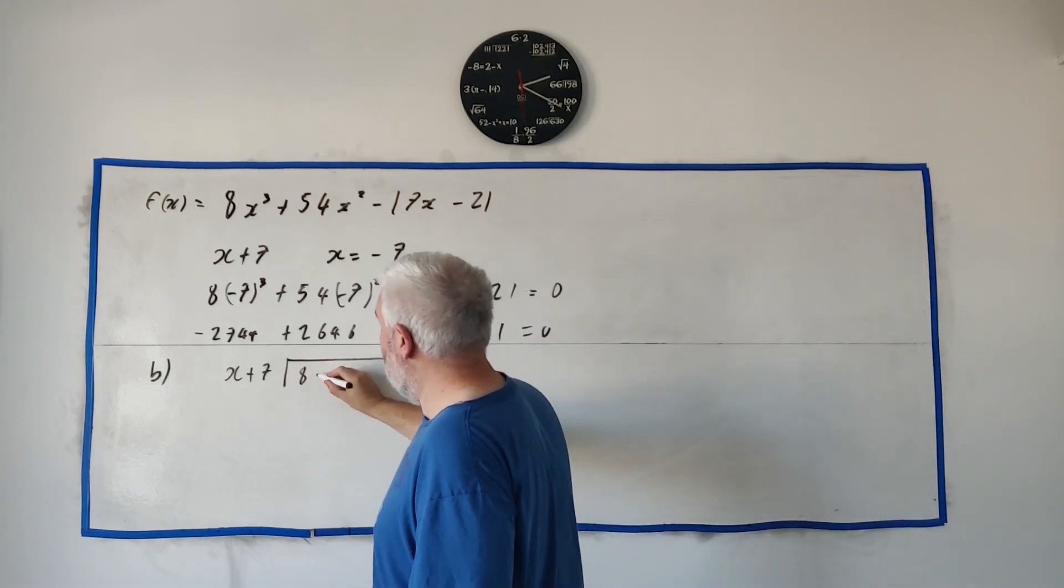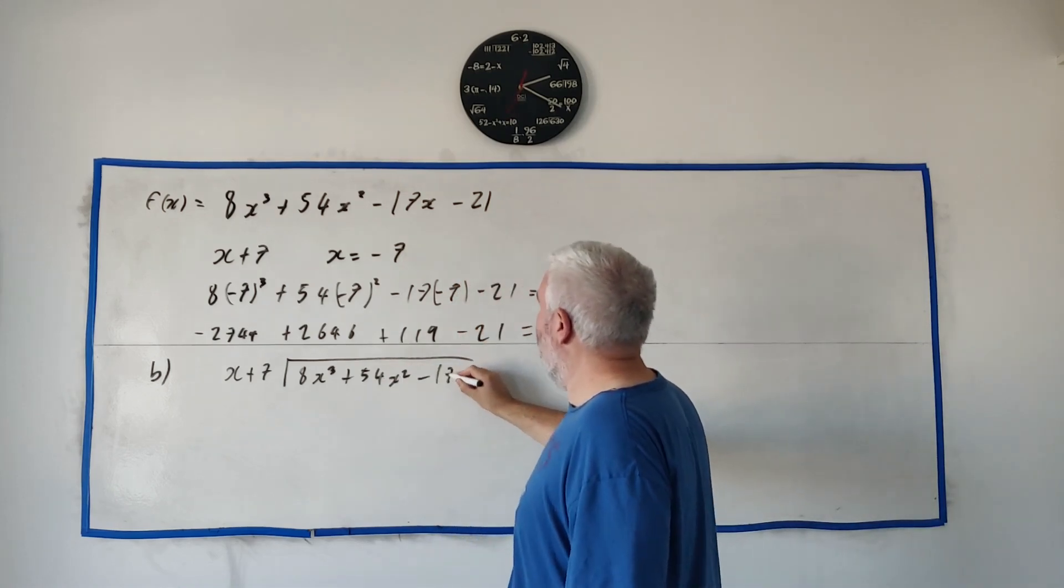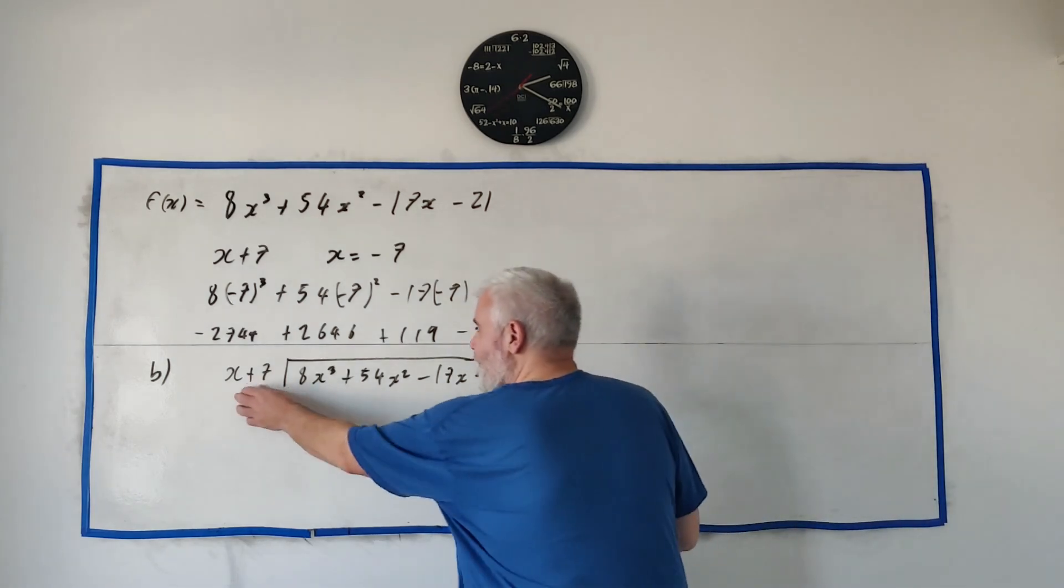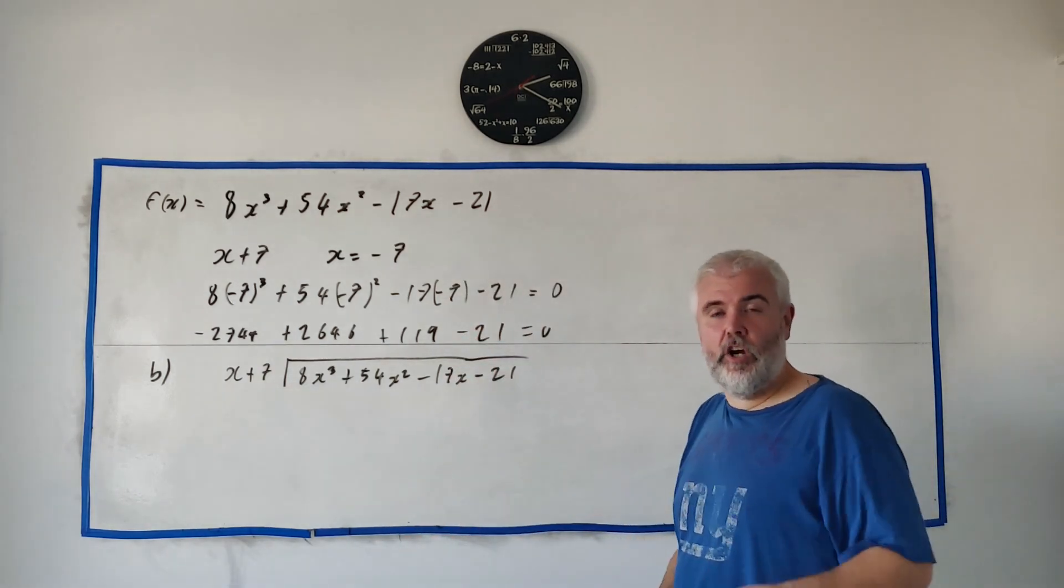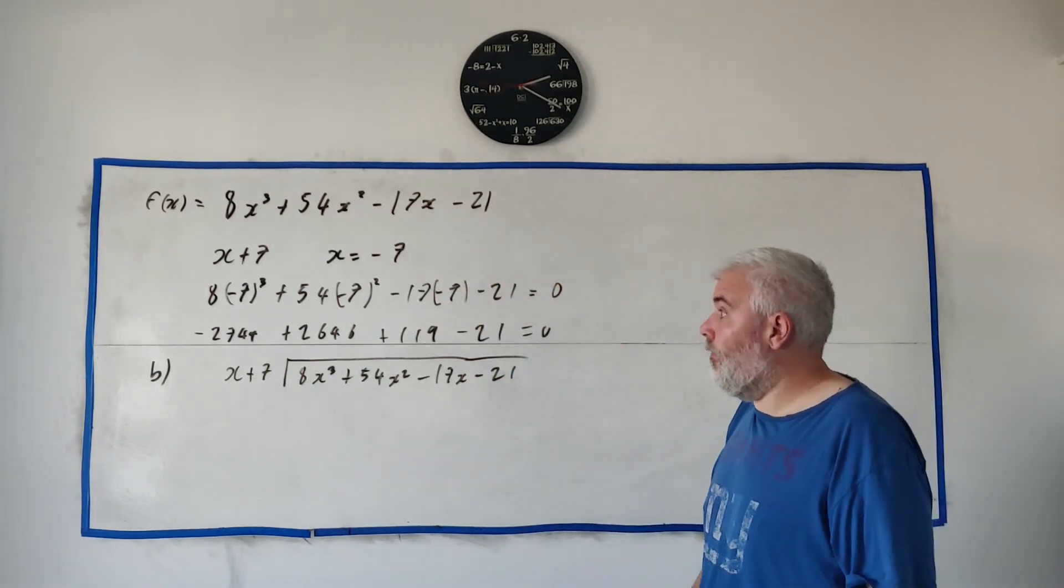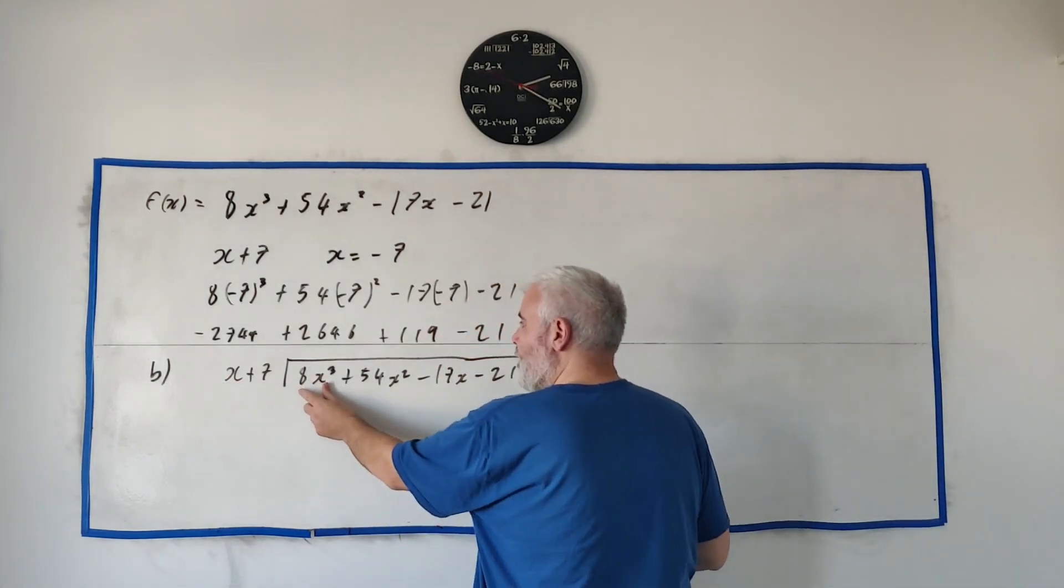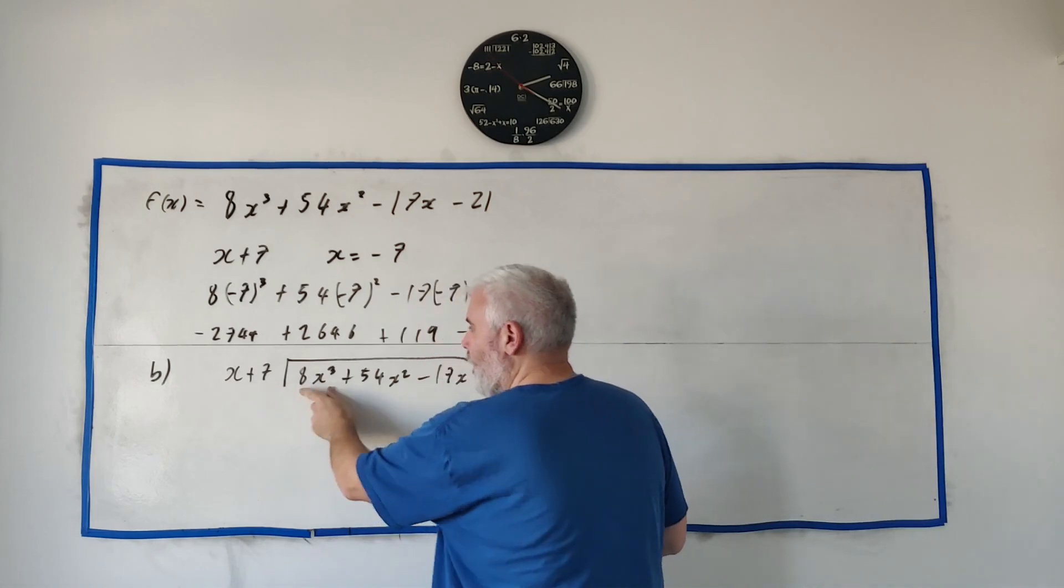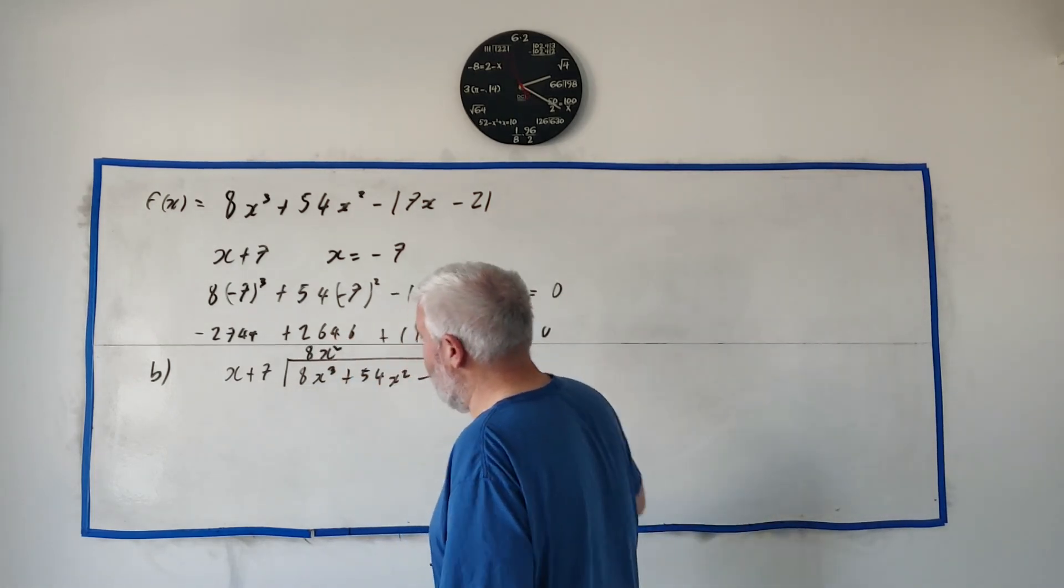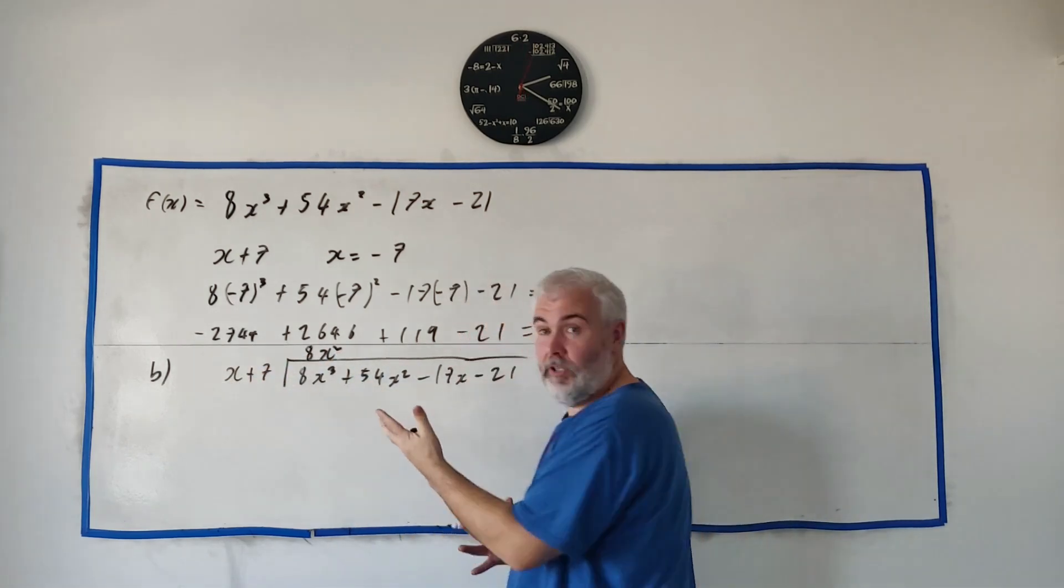So how do we do that? x plus 7 divided by long division there's probably other ways to do it but this is the way I do it and this is also the answer to part A because if this divides in evenly with no remainders it must have been a factor of f(x). Okay how do we divide it in? x goes into 8x cubed how many times? What do we have to multiply x by to get this? We'd have to multiply by 8 and x squared to get that. Then we multiply this 8x squared by both of these and see what the remainder is.